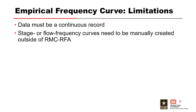The empirical frequency curve analysis in RMC RFA has some limitations. Plotting positions can only be calculated for a continuous record. If you have historic stage or flow information, Hirsch-Stettinger plotting positions can be calculated using the RMC Best Fit software. A plot showing these plotting positions on the stage or flow frequency curves will then need to be manually created outside of RMC RFA. So you do your RFA analysis, export it to Excel, and if you're using Hirsch-Stettinger plotting positions, you would compute that outside of RFA to plot a historical event that falls outside your systematic record.